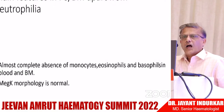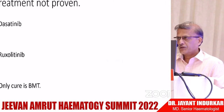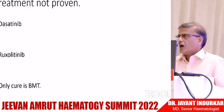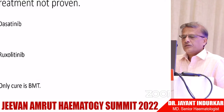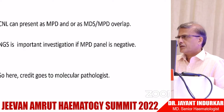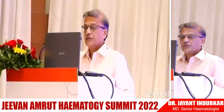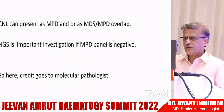Bone marrow transplant is the only cure and should certainly be tried. These patients die of severe sepsis because all the neutrophils being produced are dysfunctional and of no use. Chronic neutrophilic leukemia can present as an MPN or as an MDS/MPN overlap. Next generation sequencing is an important investigation when the MPN panel is negative. The credit for specifically diagnosing this entity goes entirely to molecular pathology.